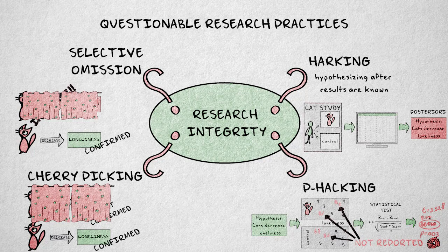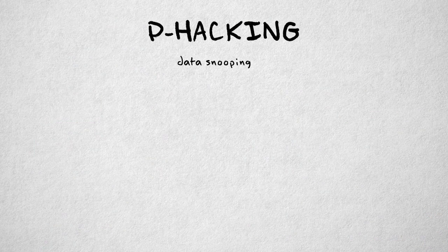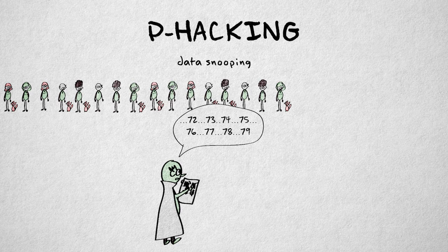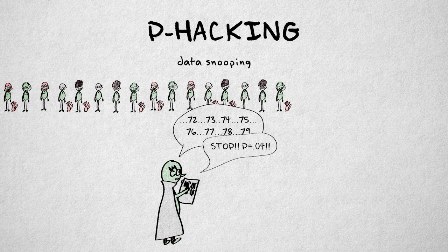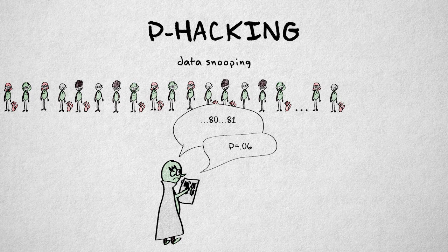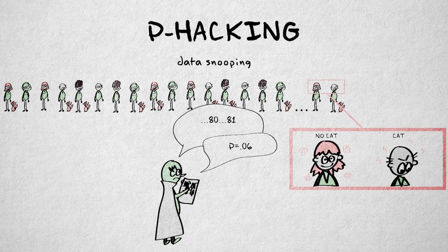A last specific type of p-hacking I want to mention is data snooping. Data snooping refers to the collection of data exactly until results show a favorable p-value. This practice is problematic because the choice to stop is arbitrary. Suppose the results are significant — the p-value is small enough — after collecting data from, let's say, 79 participants. It's entirely possible that the results will be unfavorable again if data from two more participants are included. Confirmation could be based on a fluke or extreme data from one participant.